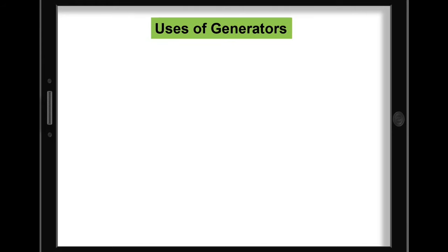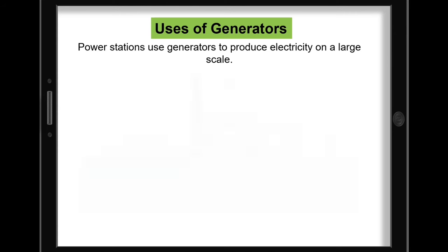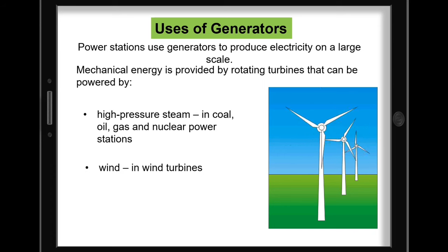To make your appliances at home work, like TV, lights, charging your phones and laptops, a generator is needed. Power stations use generators to produce electricity on a large scale. Mechanical energy is provided by rotating turbines that can be powered by high-pressure steam in coal, oil, gas, and nuclear power stations, wind, and even falling water in hydroelectric power stations.